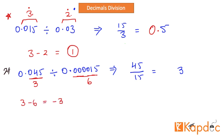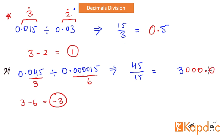Subtracting the divisor's decimal digits from the dividend's gives three minus six, which equals negative three. You might wonder how to have negative three decimal digits in the final answer. The way to handle a negative result is to add that many zeros to your final answer, giving you 3000.